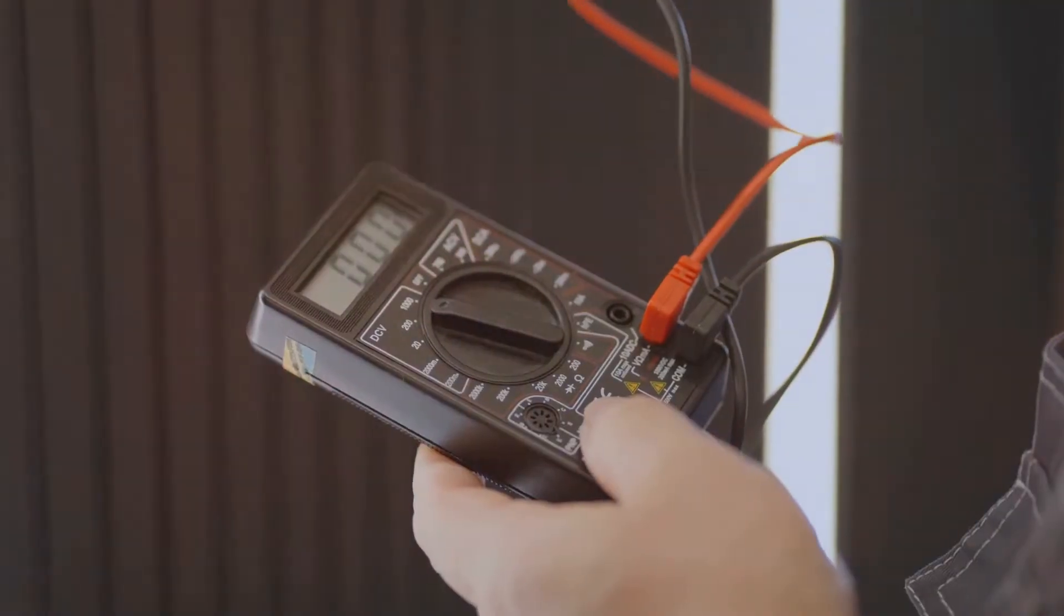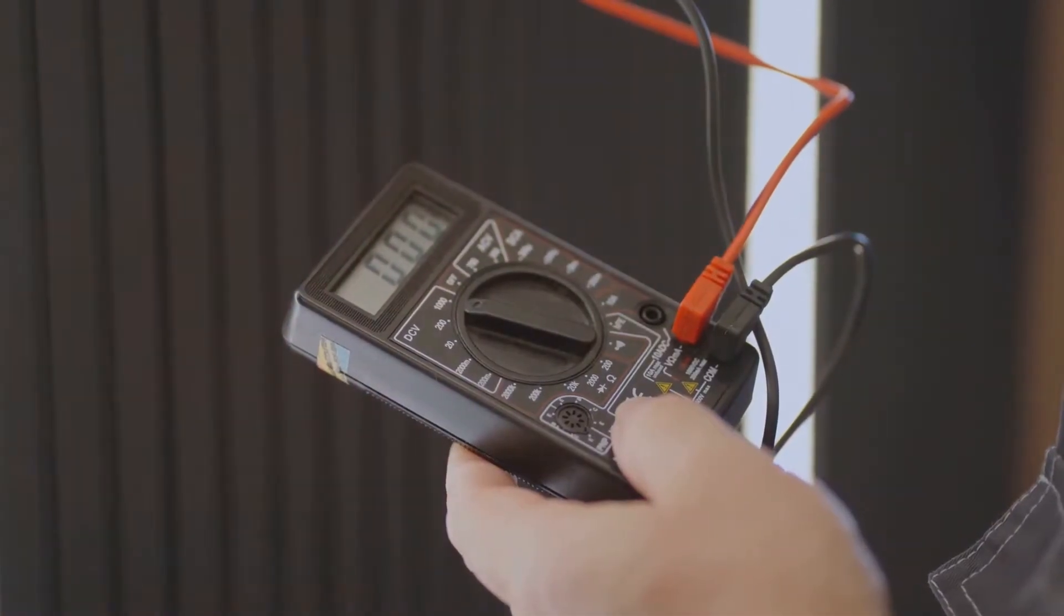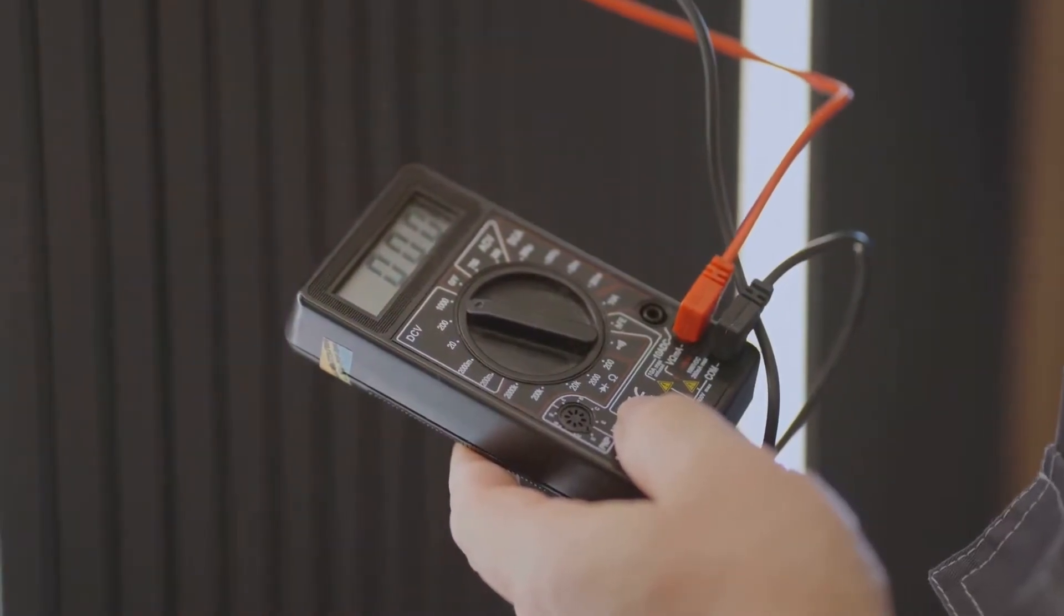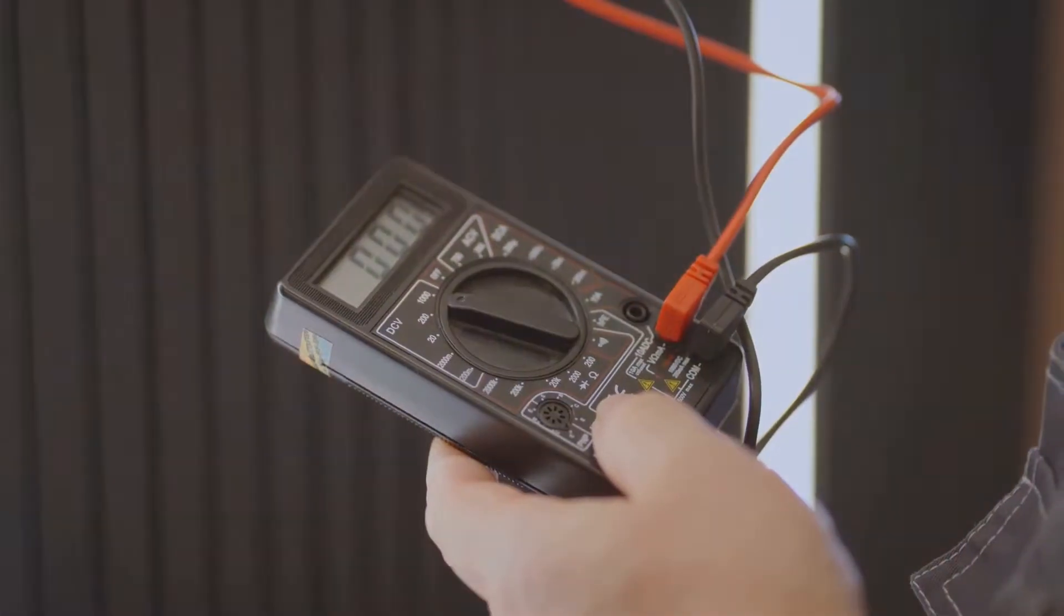A multimeter is a must-have tool for any DIYer. It's like a Swiss army knife for electricity. It measures voltage, which is electrical pressure, current, which is electrical flow, and resistance, which is the opposition to electrical flow.